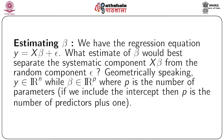Now let us look at how we estimate the coefficients in a regression model. In general, a linear model is written as y = Xβ + ε, where y is the vector of values of the dependent variable, X is the vector of values of the independent variable, β is the vector of coefficients, and ε is the error term. We will look at the method of estimating β using the algebra of least square. Geometrically, y belongs to real space of dimension n while β belongs to real space of dimension p, where p is the number of parameters. If we include the intercept, p is the number of predictors plus 1.